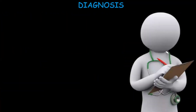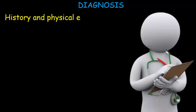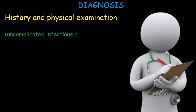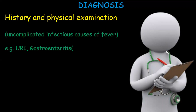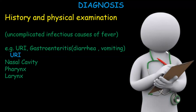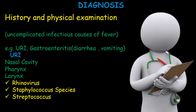History and physical examination are often sufficient to diagnose uncomplicated infectious causes of fever. One such cause is upper respiratory tract infection — an infection involving the nasal cavity, pharynx, and larynx. The most common causative pathogens include rhinovirus, influenza virus, staphylococcus species, and streptococcus species.